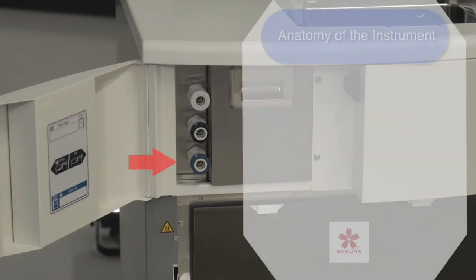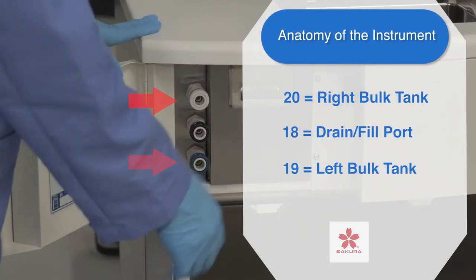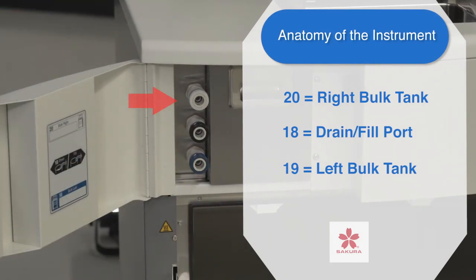The port for station 19 fills the left bulk tank and station 20 port fills the right bulk tank. These two connections only fill. Station 18 port, the middle port, is the workhorse of this processor and it fills and drains all the reagent containers as well as drains the two bulk tanks.